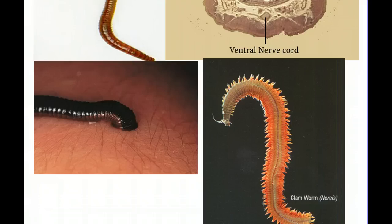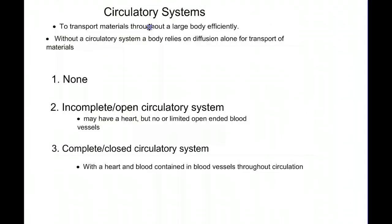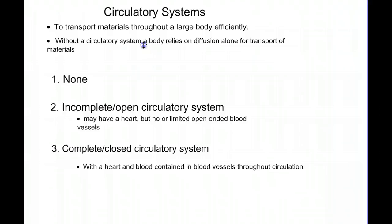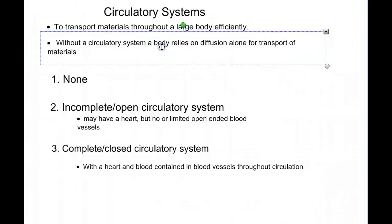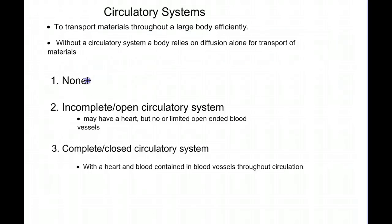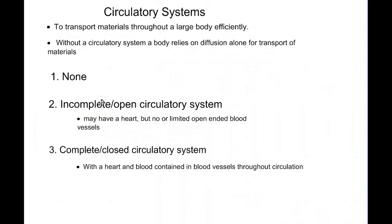But before we finish, I want to talk about a couple short things. When we talk about circulatory systems, we know that circulatory systems are used to transport materials through a large body efficiently. And without a circulatory system, we rely on diffusion alone to move those materials. And so we see that we had animals that had no circulatory system. And now with the earthworms, we have a closed circulatory system. But we're also, in the near future, going to talk about some animals with incomplete or open circulatory system, where they may have a heart and with no or limited open-ended blood vessels.